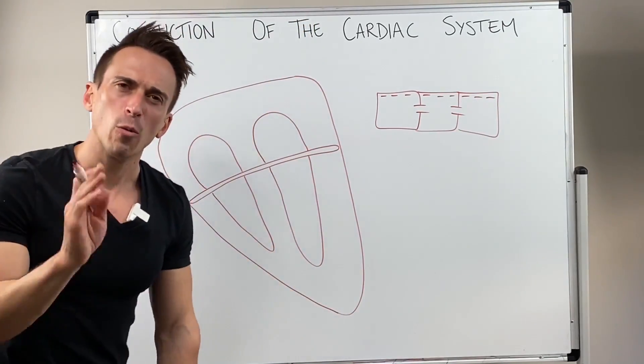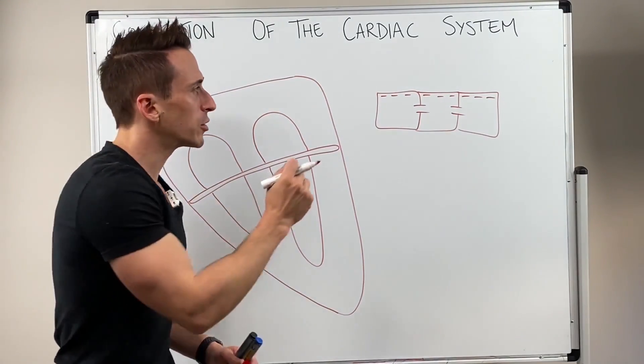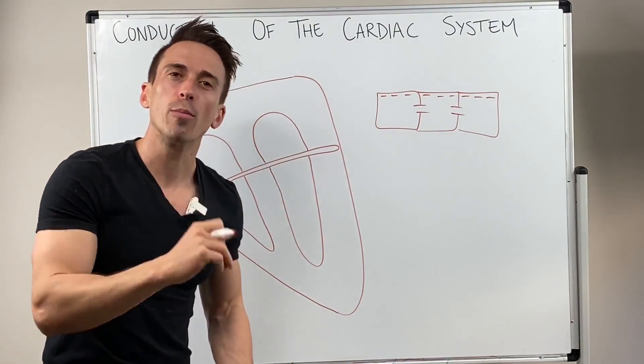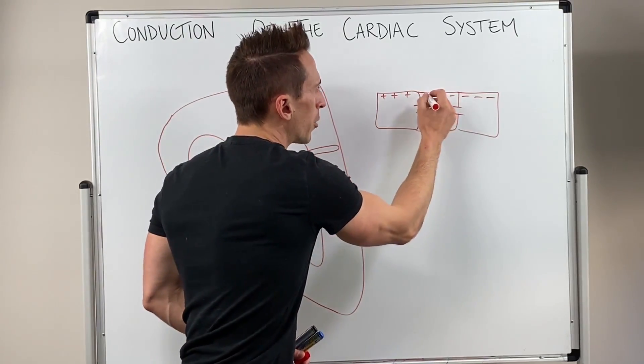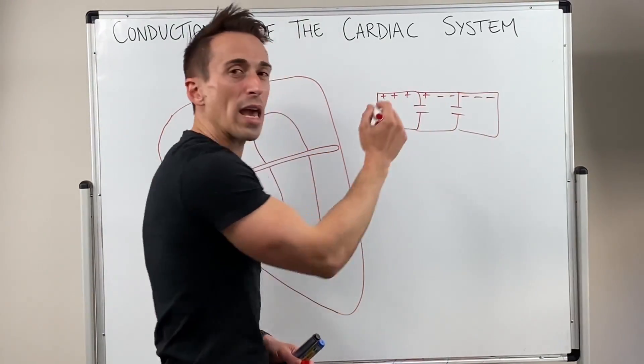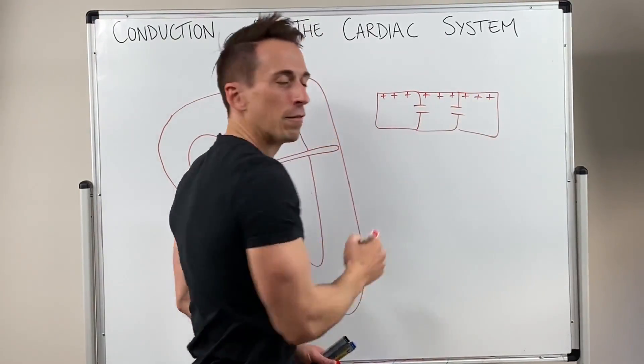If you want these muscle cells to contract, you need to turn that negative charge into a positive charge. When it does so, going from negative to positive, it spreads that wave of charge change from one cell to the other very easily.